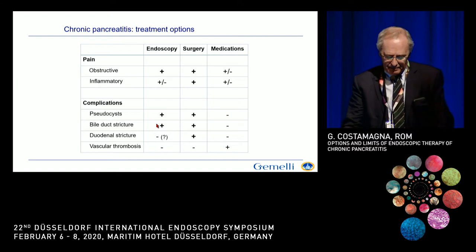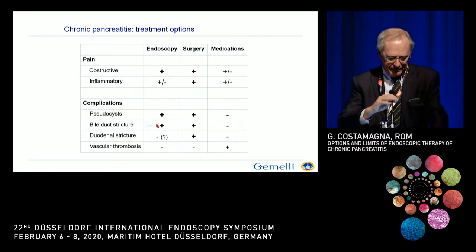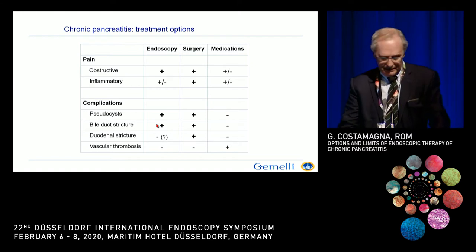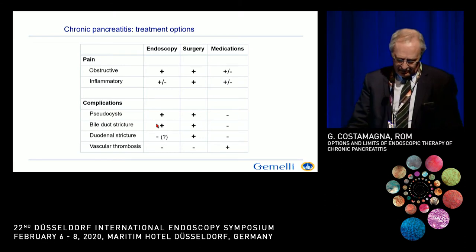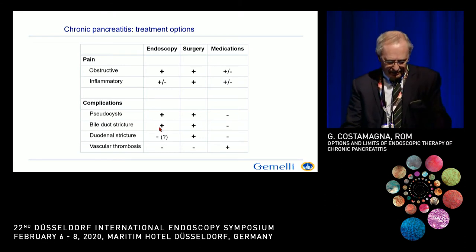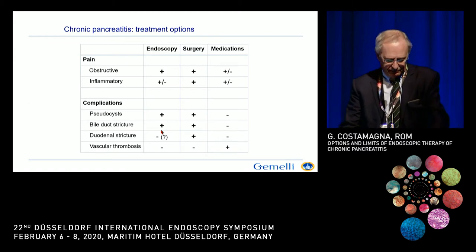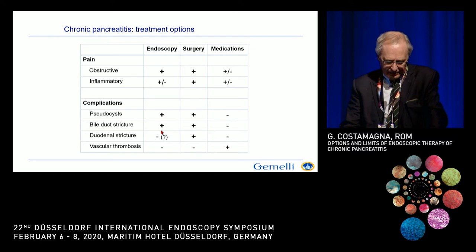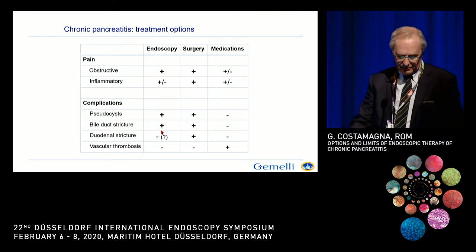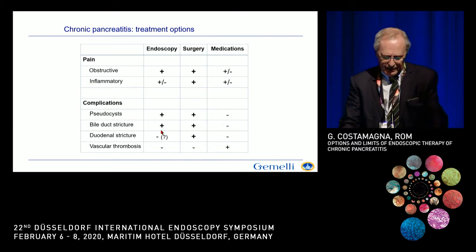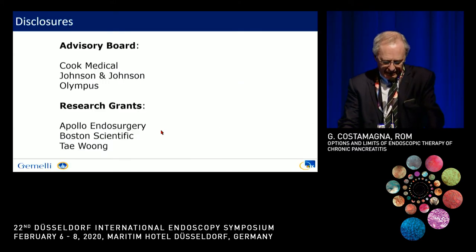The main clinical problem in chronic pancreatitis is pain, and then there are complications that may occur during the natural history of chronic pancreatitis. We'll focus on treatment of pain. Pain may be of obstructive origin or inflammatory origin. Both endoscopy and surgery are effective in obstructive pain, and endoscopy is much less effective in inflammatory origin, where surgery is still probably the best option.